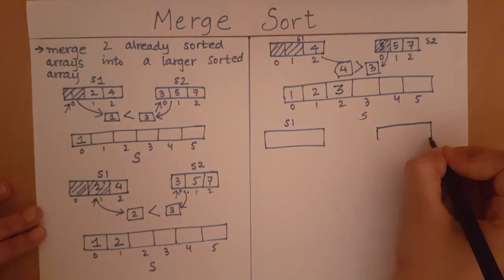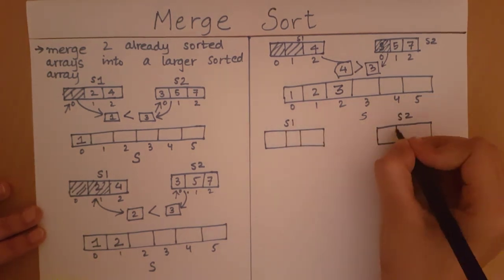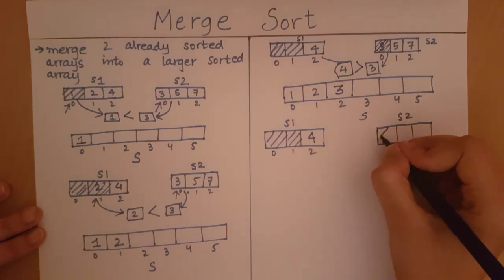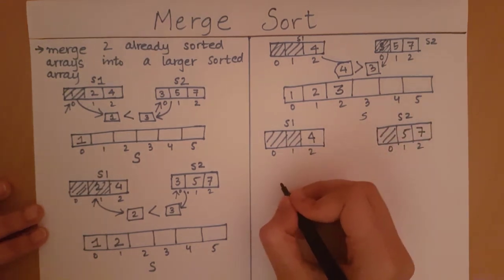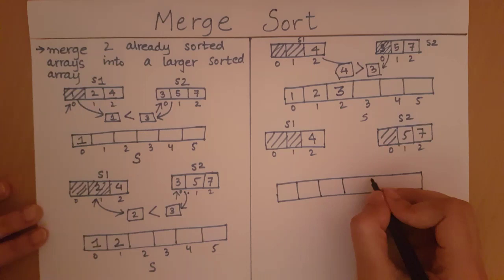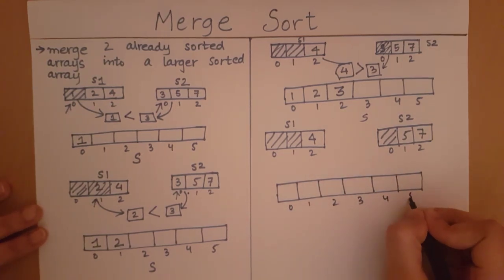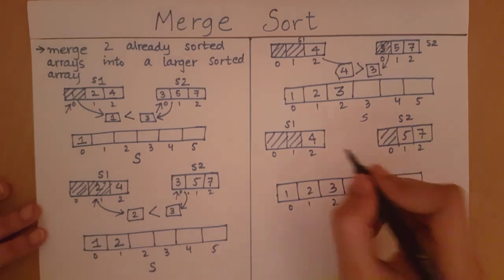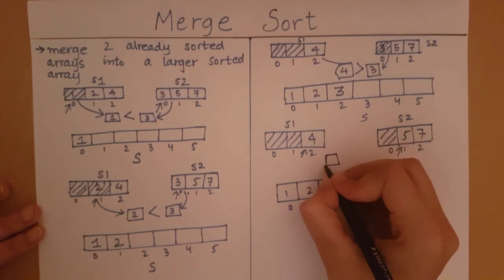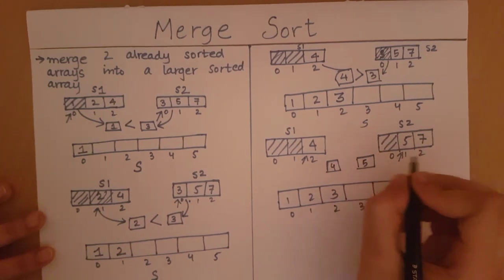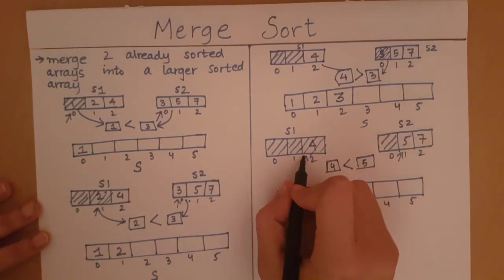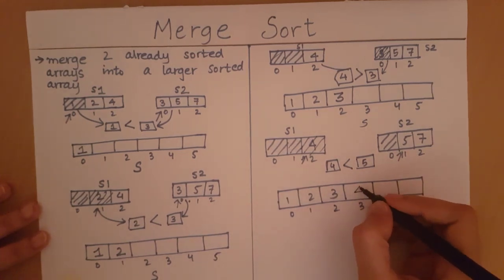Now, let's see what our array looks like. Now, the smallest element in s1 is 4, smallest element in s2 is 5. I will compare these two elements, 4 and 5. 4 is less than 5, so I will remove from array s1, I will remove from the front of s1 and I will add it to the end of s.